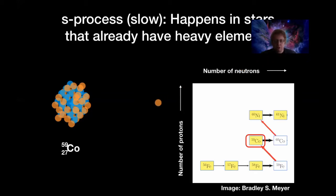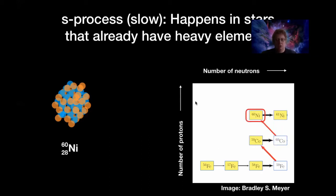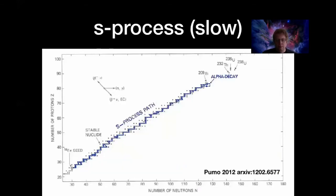Continuing on: we add another neutron to cobalt, but cobalt with mass 60 is also unstable, so another neutron turns into a proton, and we move up to nickel. By keep adding neutrons and decaying whenever unstable, we follow this staircase pattern all the way from iron up to very heavy elements like bismuth. This is an efficient way to produce many of the heavier elements we see today.